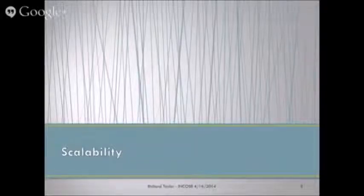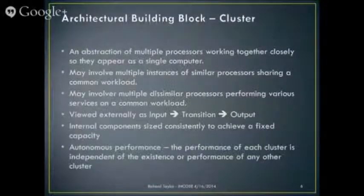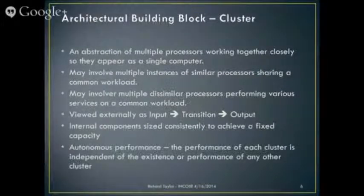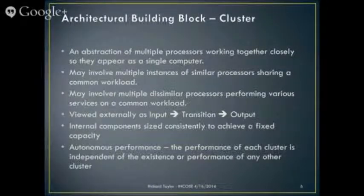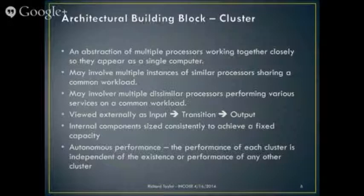Let's talk about scalability — the most critical element of a large system. All of these things work in smaller systems, but many systems change their behavior dramatically when they get beyond a certain critical mass. Invariably, there's some point of contention — a big database in the sky that everybody's trying to hit. In the small, that worked fine, but eventually you hit a point where everything affects everybody else. Scalability is the key.